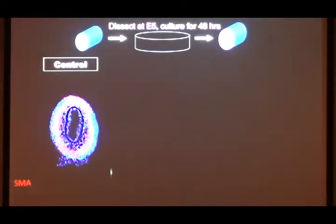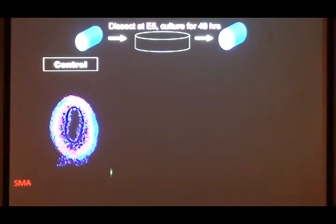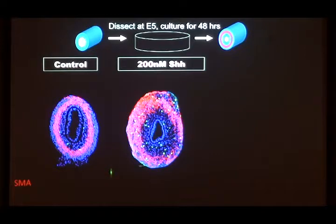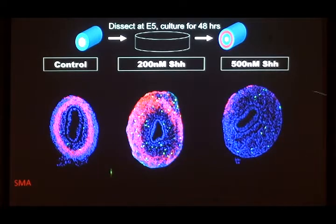A graduate student in my lab, Tyler Huck, decided to investigate this. He took a gut tube, put it in a dish, and grew it in culture for 48 hours. The smooth muscle layer differentiated — that's the control. If you add a little bit of hedgehog, you get more muscle, consistent with the mouse genetics saying you need hedgehog for smooth muscle. If you add more hedgehog, you get even more smooth muscle. But if you add enough hedgehog, you lose it completely, consistent with the other group's findings. So it seems to be a threshold response.